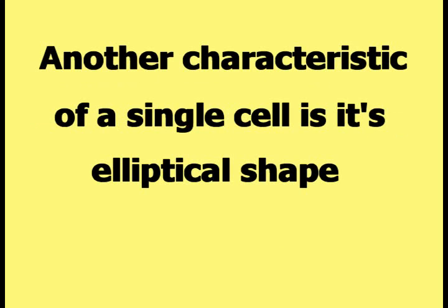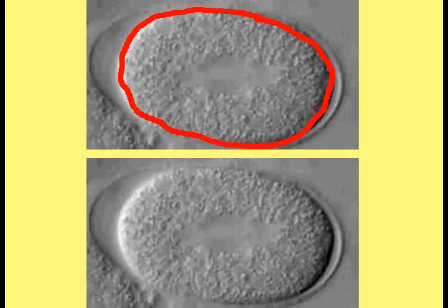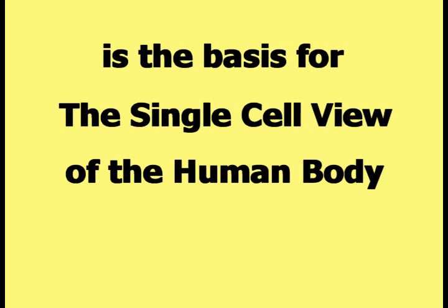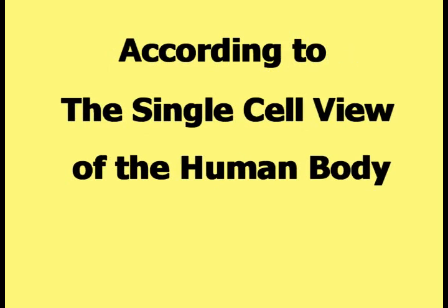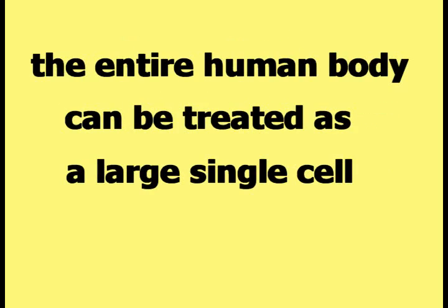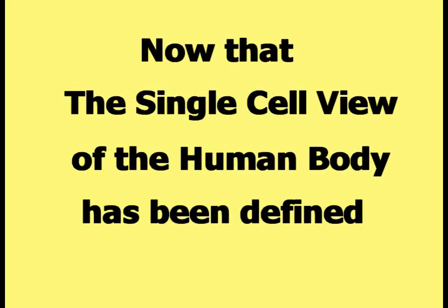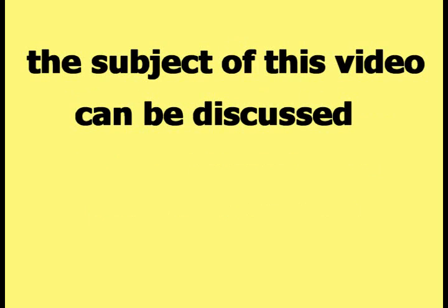Another characteristic of a single cell is its elliptical shape, as highlighted in this picture. The characteristic elliptical shape of a single cell is the basis for the single cell view of the human body. According to the single cell view, the entire human body can be treated as a large single cell, located as shown in this picture. Now that the single cell view has been defined, the subject of this video can be discussed.